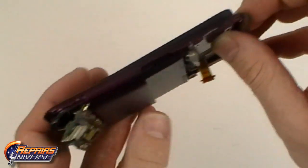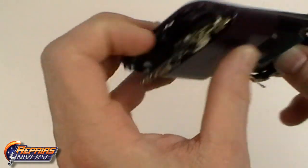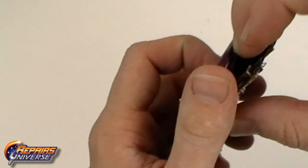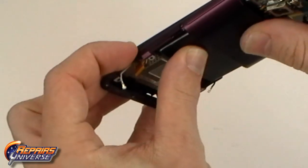We can now begin pushing through the screen assembly and battery from the front housing. Note that there still will be a large amount of adhesive holding the battery in place.